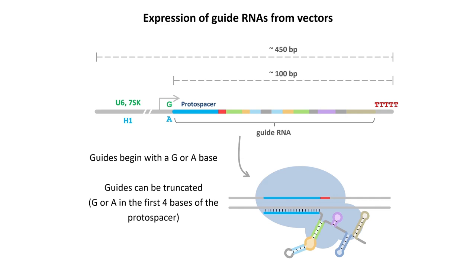When you want to express guide RNAs in cells from a DNA template, the way to do this is to use RNA polymerase III promoters. These promoters are very useful because they're quite short, have very high activity, and importantly they start at a defined base. For example, the U6 and 7SK promoters start at a G base, and the H1 promoter starts at an A base — this base will be the first base of your protospacer. So you can only express guide RNAs that begin with a G or an A. Another key feature of polymerase III promoters is that they are terminated very easily with a row of Ts — five or more Ts terminates the transcription — so you can easily get these short transcripts that start at a defined base, are a defined length, and can be expressed in high levels.